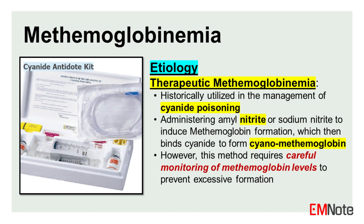It is worth noting that therapeutic induction of methemoglobinemia has been historically utilized in the management of cyanide poisoning. This approach involves administering amyl nitrite or sodium nitrite to induce methemoglobin formation, which then binds cyanide to form cyanomethemoglobin. However, this method requires careful monitoring of methemoglobin levels to prevent excessive formation.